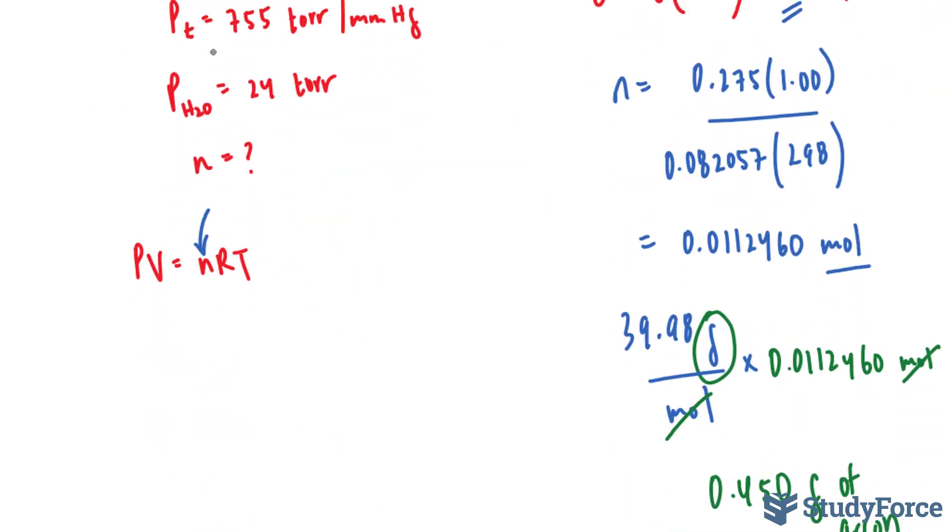Let's go ahead and find it. We have the total pressure is 755. So Pt is equal to the partial pressure of H2O plus the partial pressure of hydrogen. I'll substitute the values that I have. 755 is equal to the partial pressure of water, which is 24, plus the partial pressure of hydrogen gas. And that's what I'm looking for.